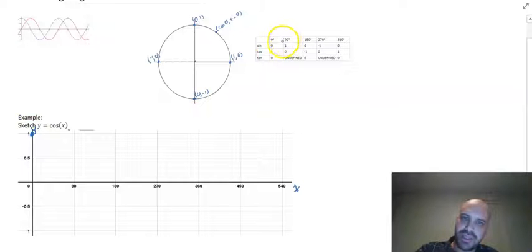When the angle is 90, cos is 0. When the angle is 180, cos is negative 1. When the angle is 270, cos is 0. When the angle is 360, back to where we started again, cos is 1.